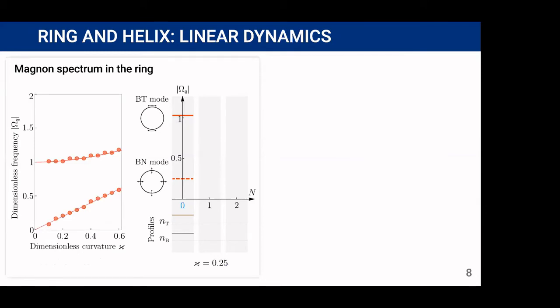Now let's proceed with the description of linear dynamics in this system. Considering linear excitation on the background of ground state in the ring, we show that the magnon spectrum in the ring is discrete such that for each azimuthal quantum number n which determines the number of periods of magnons on the ring corresponds two frequency levels. The low frequency corresponds to the transversal mode and high frequency corresponds to the longitudinal mode. On the left panel you can see the dependence of frequency on the curvature of the ring for azimuthal quantum number n equals zero, one, and two. The lines correspond to the analytic prediction and symbols correspond to the results of numerical simulations.